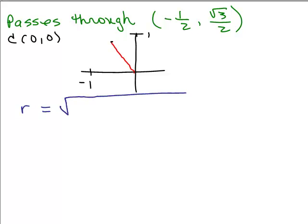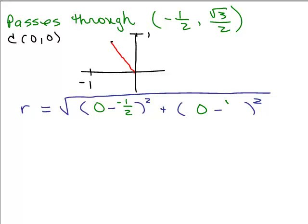Our radius is the square root of the difference of the x terms. I've got 0 and negative 1 half, so I'm writing that as 0 minus negative 1 half. And then I'm going to do the difference of the y terms: 0 and square root of 3 over 2. Now, before I go on, let me figure out what r squared is, since that's what I really need for the equation. So I'll square both sides to get rid of the big square root. We get r squared equals — when you square a square root, you just get what's underneath — so we've got 0 minus negative 1 half squared, which is 1 half squared.